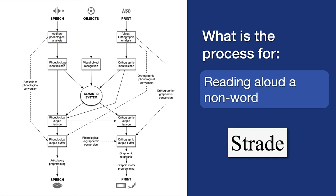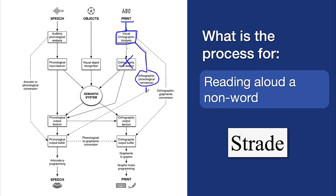Reading aloud a non-word: how do you know that a word says 'strayed' when you've never seen it before? You read aloud a non-word by understanding the letters. Nothing happens in the input lexicon because you haven't seen that word before. But you're able to use letter to sound rules to assemble the sound of it, then program that and say it.